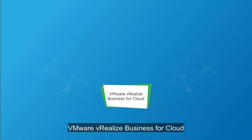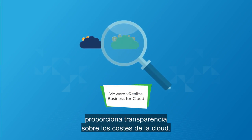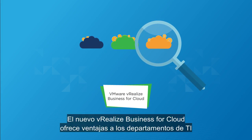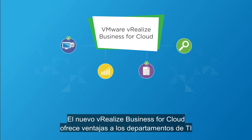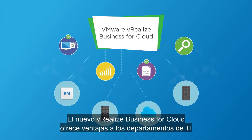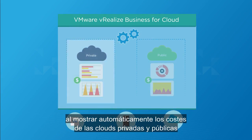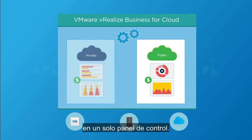VMware vRealize Business for Cloud provides transparency of cloud costs. The new vRealize Business for Cloud delivers benefits to IT by presenting automatic costing of private and public, visible from a single pane of glass.